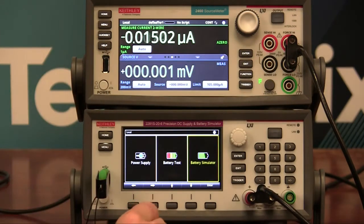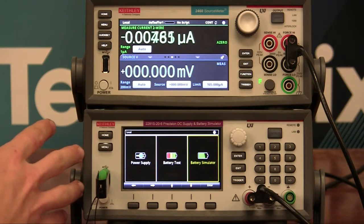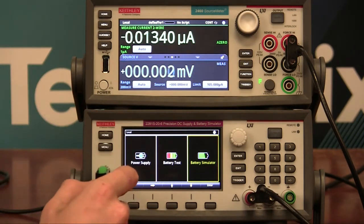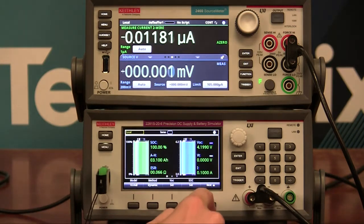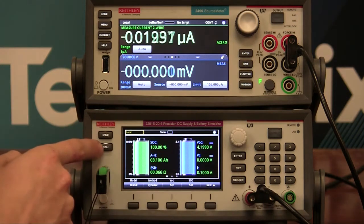The first step is to load a AA battery profile into the 2281S battery. So I've got a profile loaded onto this flash drive, and I'm going to import it into this battery simulator. To do that, go to the battery simulator, go to the menu, and find model.